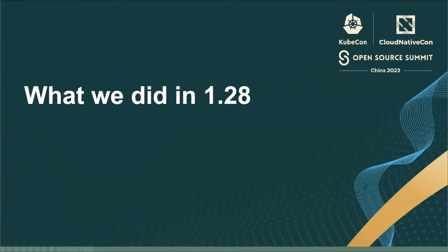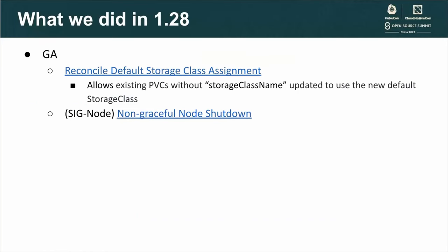Let me talk about what we did in the 1.28 release. We have GA features in 1.28. The first one is reconcile default storage class assignment. This feature allows a PVC without a storage class name to be updated to use the default storage class when it becomes available. It differentiates the case when the storage class name is set to an empty string and when it is not set at all in a PVC. With this change, all PVCs that have storage class name set to an empty string can be bound only to PVs that have storage class name also set to an empty string. However, PVCs with missing storage class name can be updated later once a default storage class becomes available. If the PVC gets updated, it will no longer bind to PVs that have storage class name also set to an empty string.